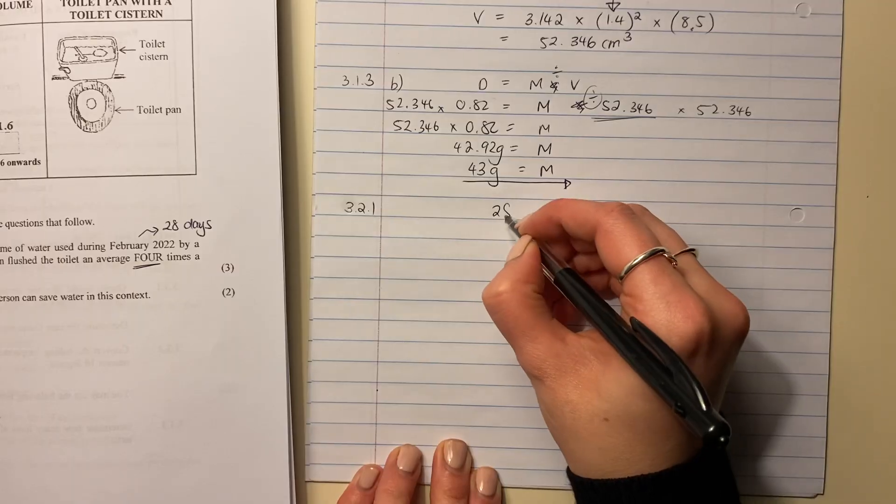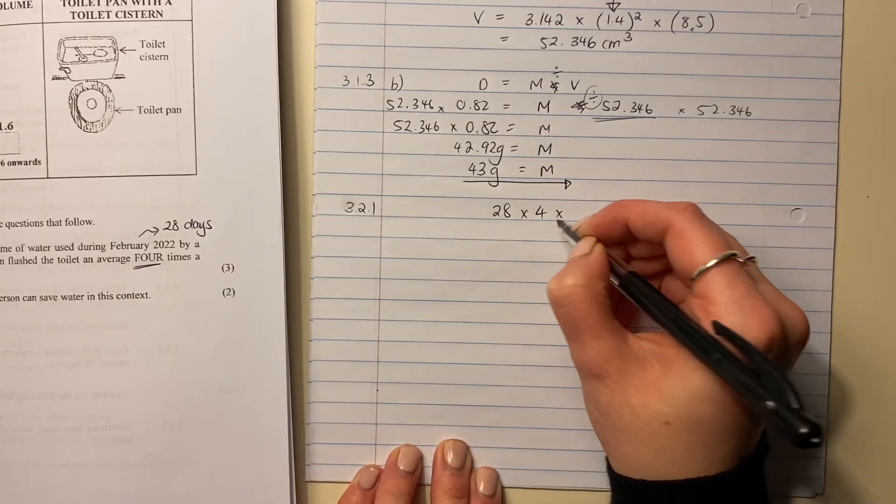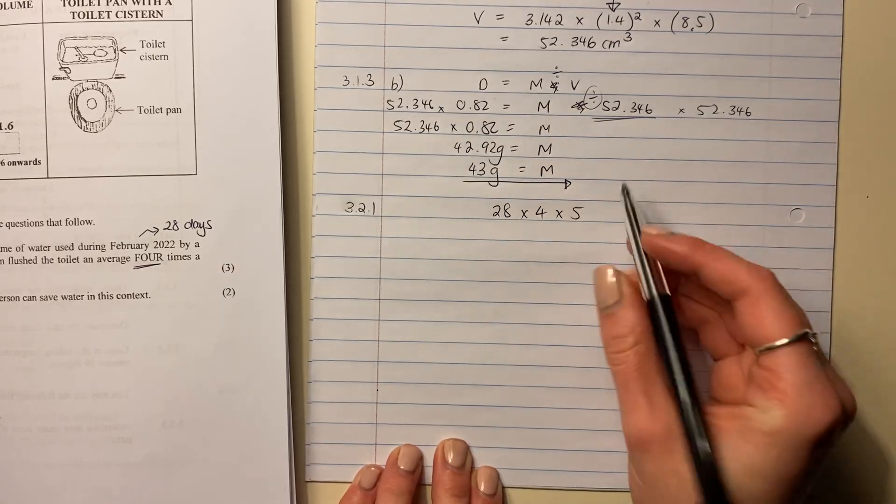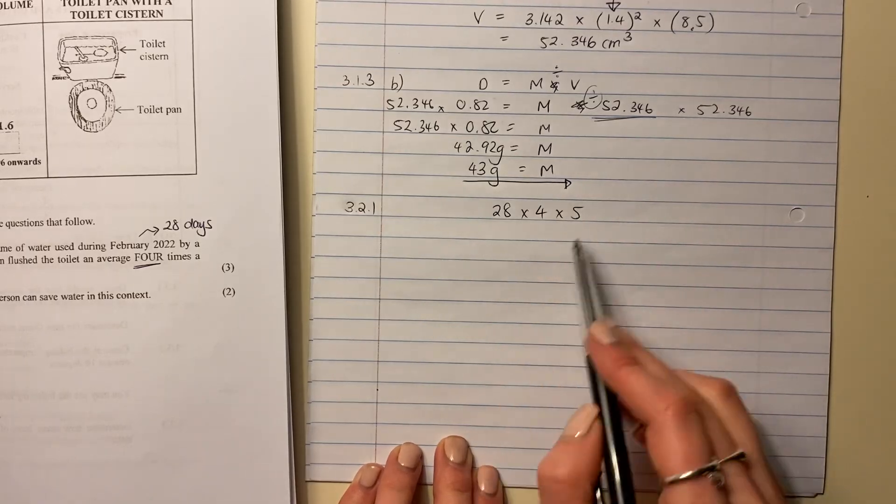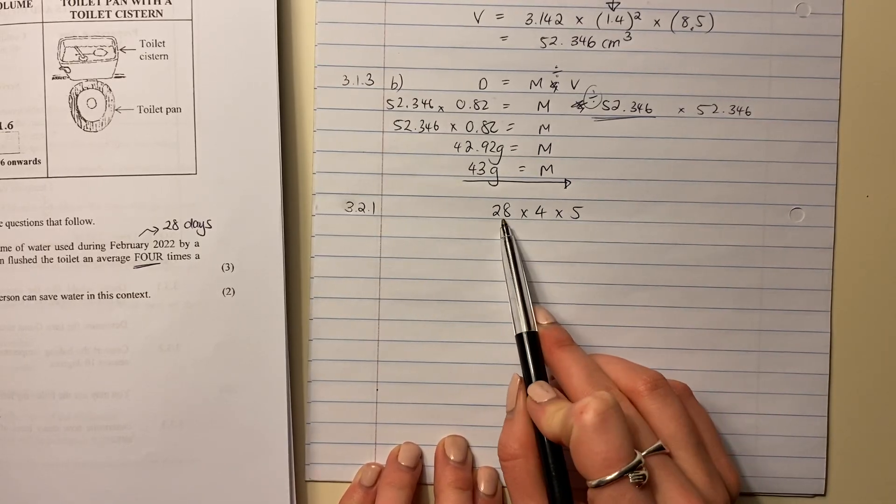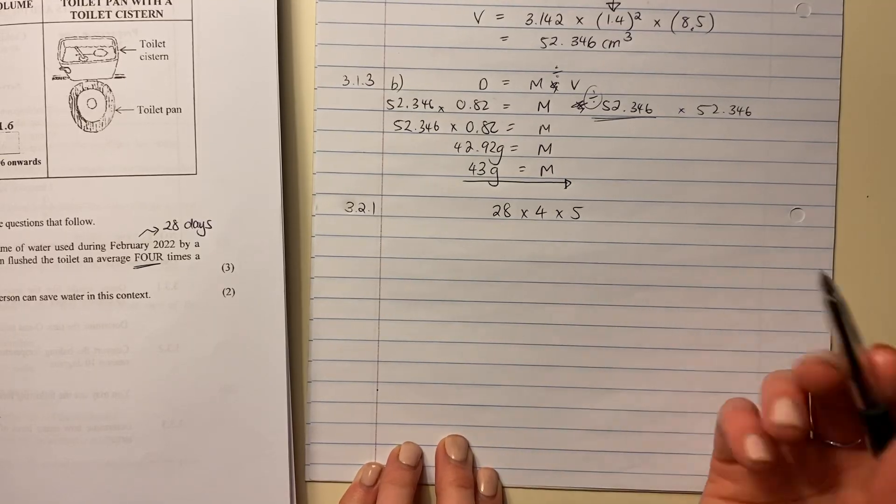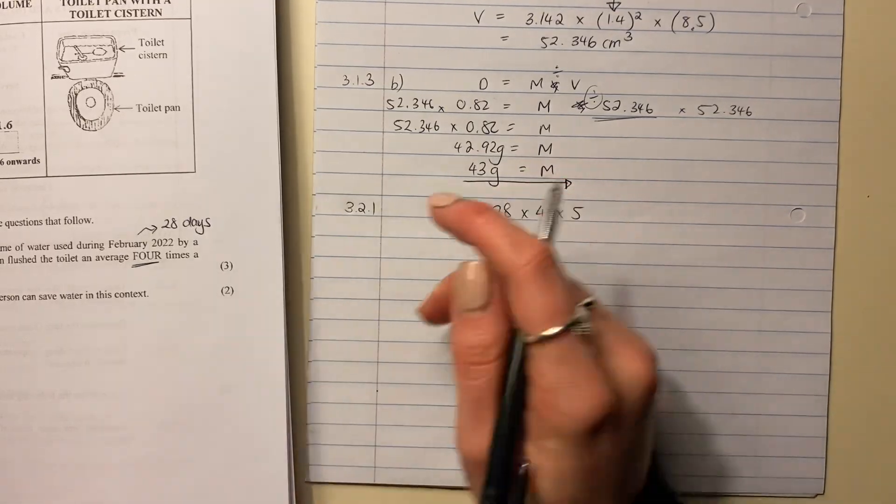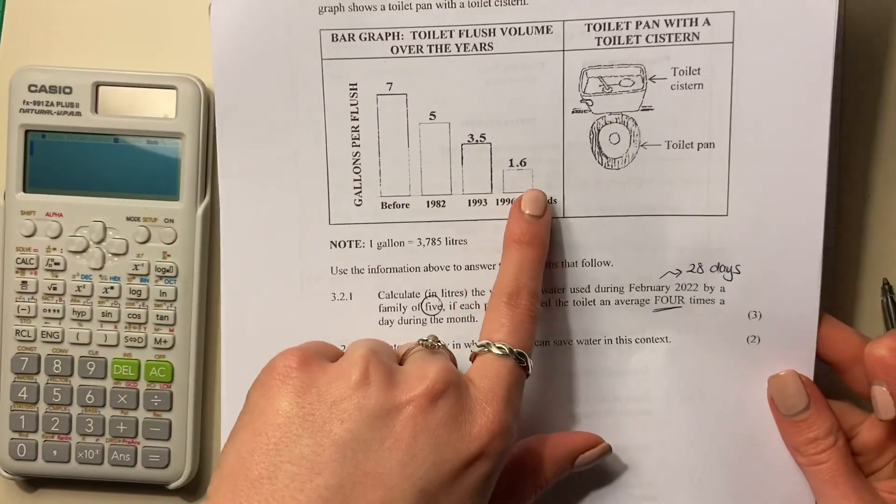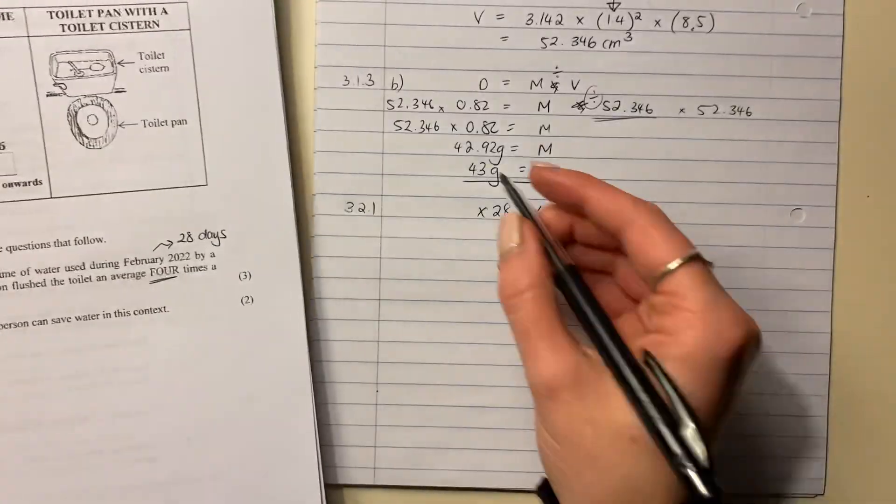So we know that it's 28 days. There's five people and they are each flushing four times. So this is how many flushes there will be. 28 days, four times a day by five people. But now we need to say, well, how many gallons do they use per flush, right? Well, the gallons that they use per flush is 1.6.